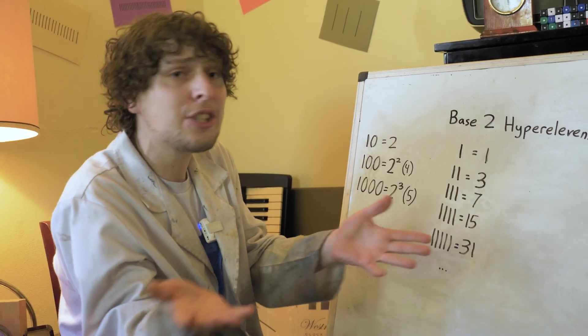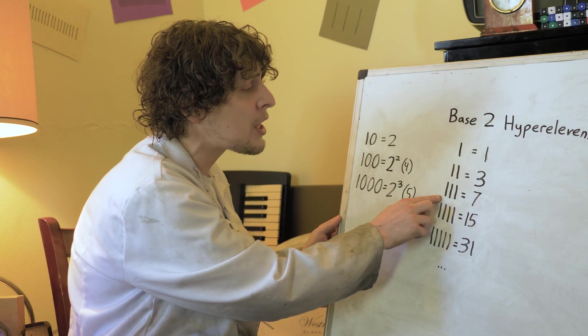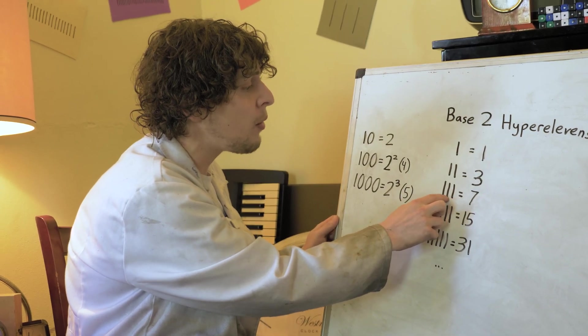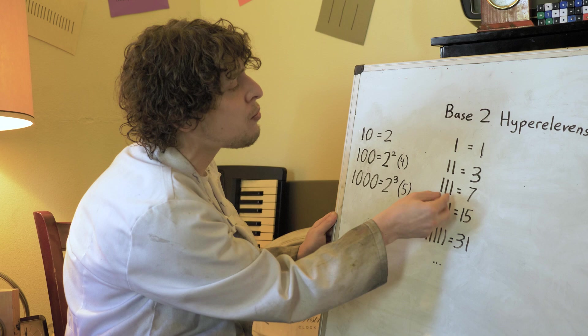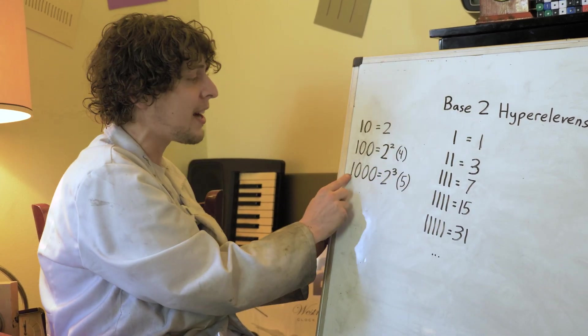And that makes sense numerically too. Because if we look at the third one, we have 111, which is one less than a reset to the next place in binary. 1000.